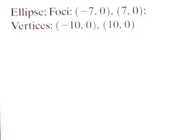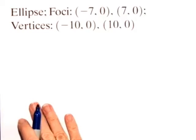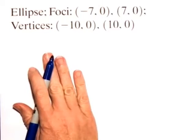For this problem, we'll find the standard form of the equation of a conic section. We're told that we have an ellipse and we have information about the foci and the vertices.